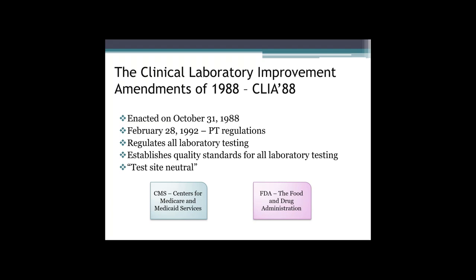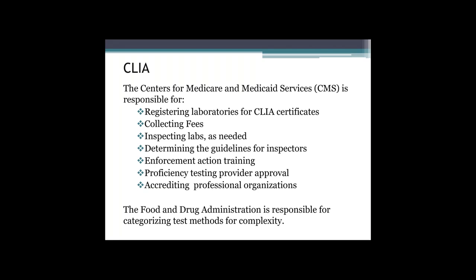There are two agencies that carry out the CLIA federal regulations: CMS, which is the Centers for Medicare and Medicaid Services, and the FDA, which is the Food and Drug Administration. CMS, with the Centers for Disease Control and Prevention, or CDC, were originally charged with developing and implementing the CLIA regulations, and are responsible for the items listed on this slide. The FDA, on the other hand, is specifically responsible for categorizing test methods for complexity, which drives which pieces of the CLIA rule we have to follow for each type of testing.